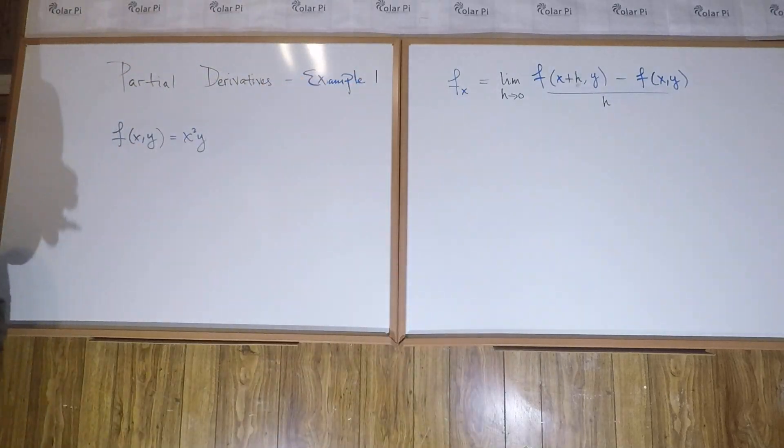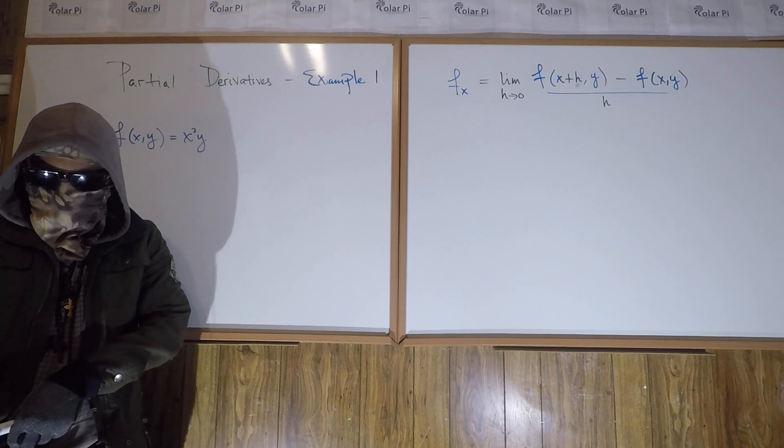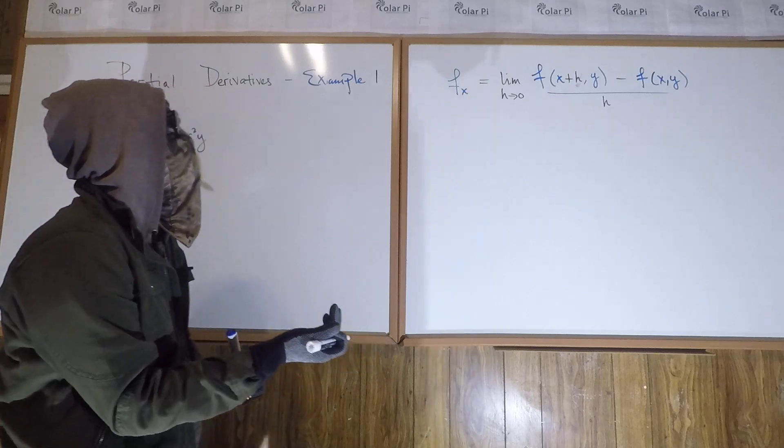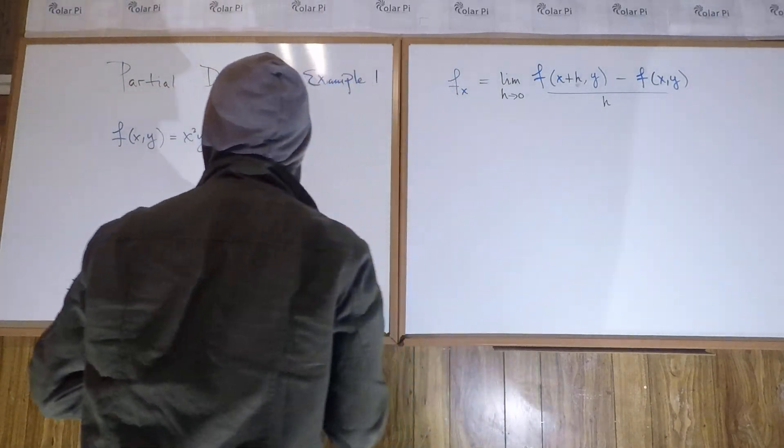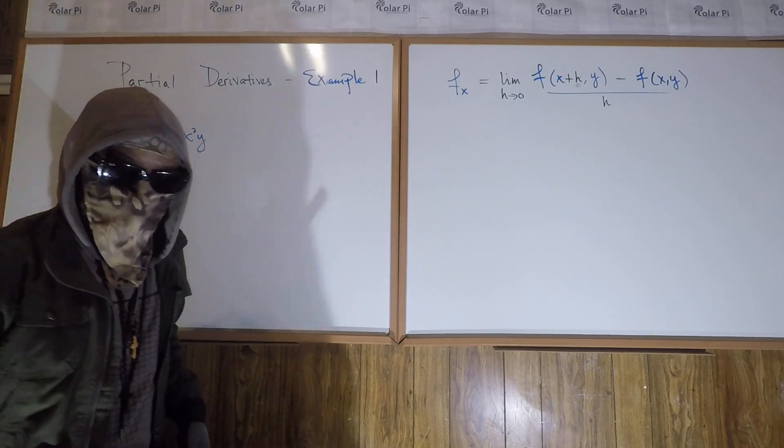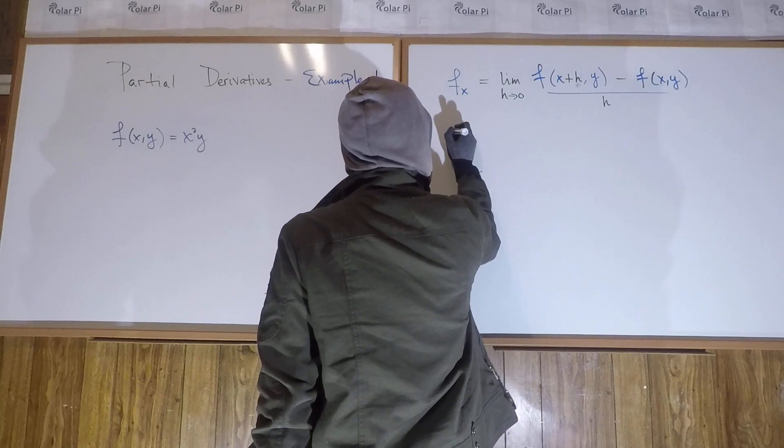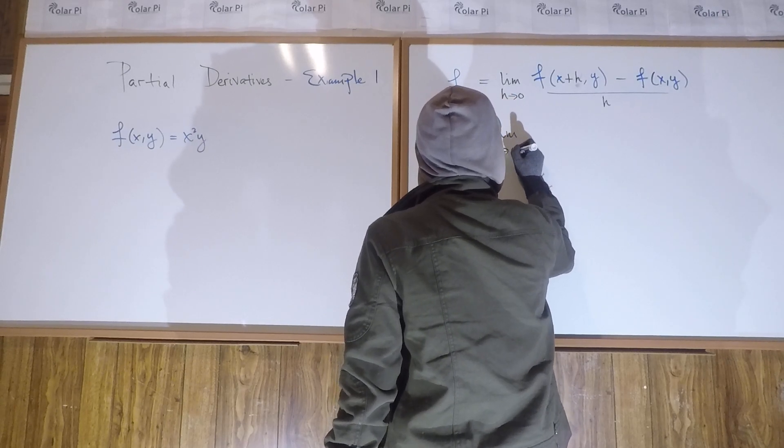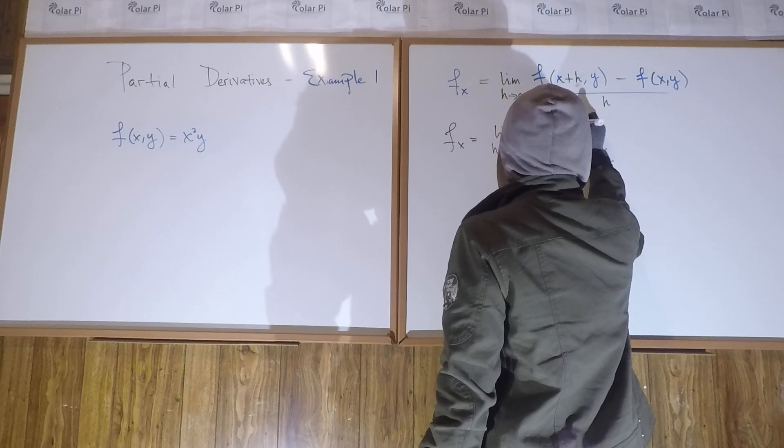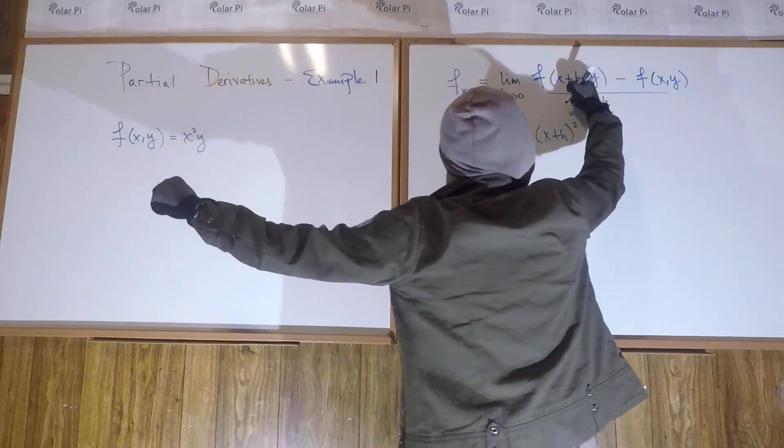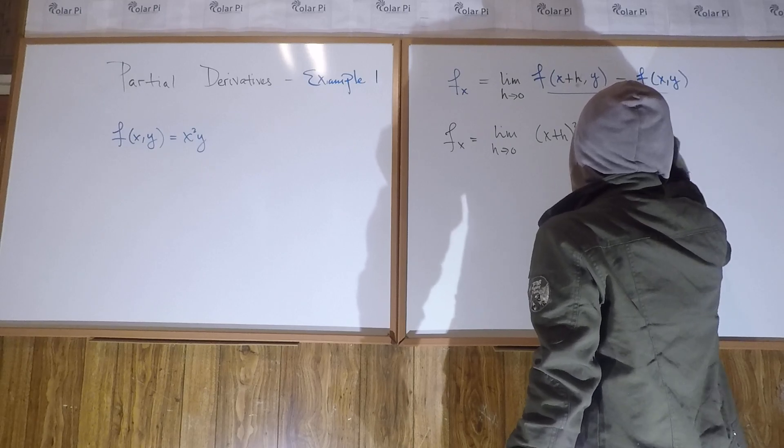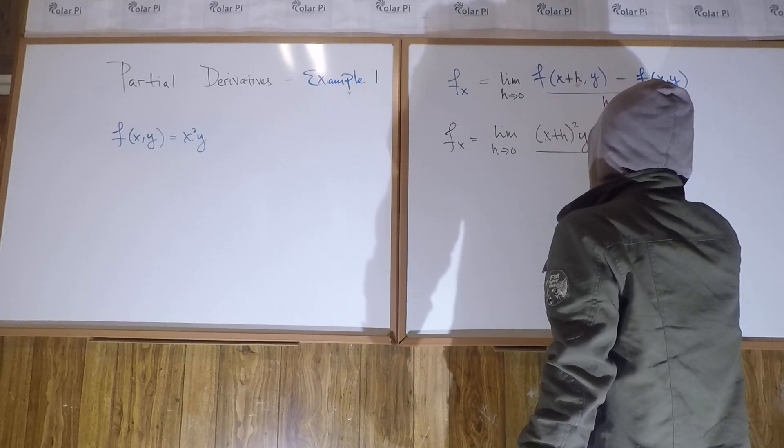Okay, so let's use this. So fx, according to this limit definition, is going to be the limit as h goes to zero of x plus h squared, right? In place of x we have x plus h squared, but y stays, minus, and then x squared y is f of x comma y, right? All over h.